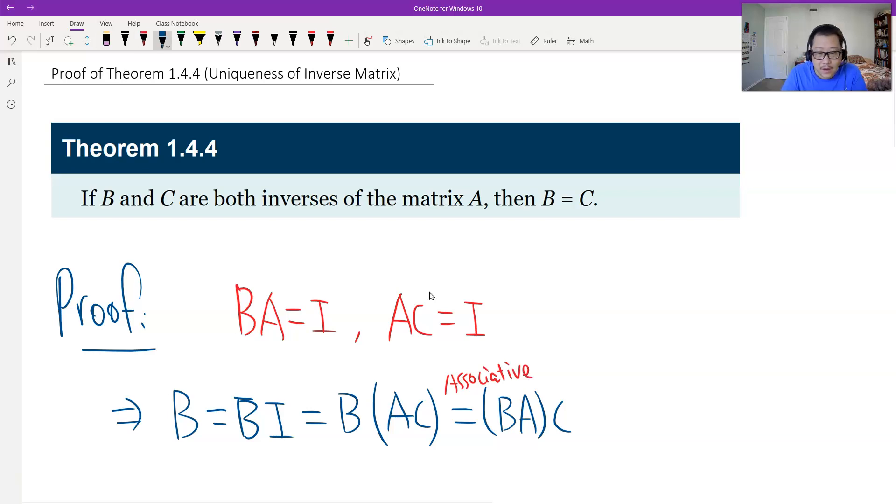So B times A equals I again. So that's I times C. The identity matrix does not change C. That should be the answer.